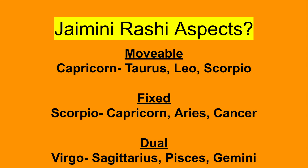The next example is of a fixed sign, Scorpio, which will aspect Capricorn, Aries, and Cancer. It doesn't aspect Libra because Libra sits right next to it. And for the dual signs, Virgo will simply aspect Sagittarius, Pisces, and Gemini. So dual signs always aspect one another.